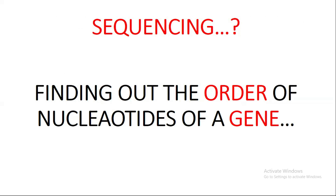What is basically sequencing? My definition is: finding out the order of nucleotides of a gene. We have a gene of interest but we do not know what is the sequence or the order of the nucleotides present in that gene — so we want to find that out. In my opinion, finding out the order of the nucleotides of a gene is basically sequencing.